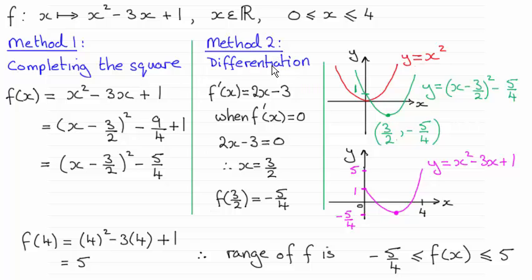The other method is by differentiation and locating the minimum stationary point. What we've got here is a quadratic equation so we expect a u-shaped curve.